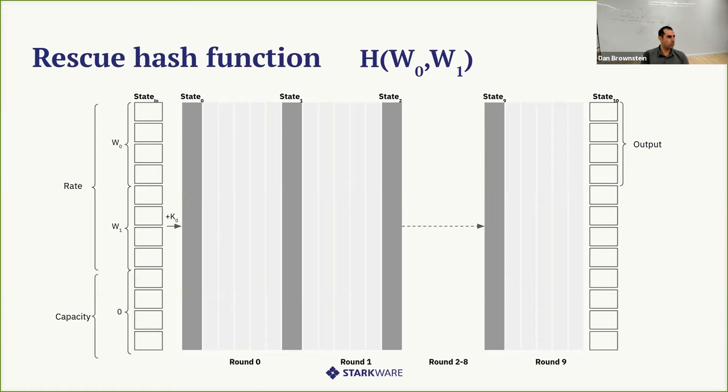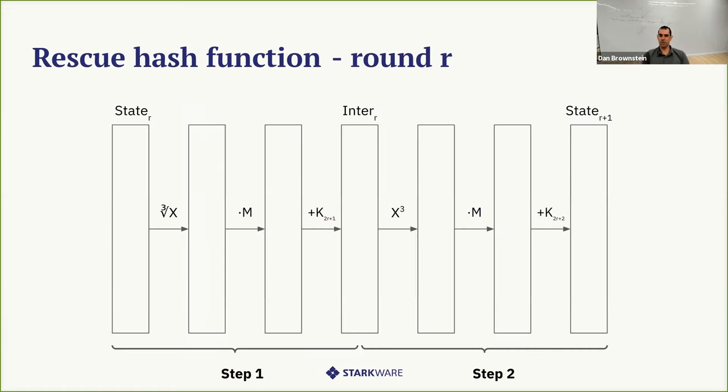If you looked into each round, so each round consists of two steps. Each step consists of an S-box. In the first step, it's taking the third root of each element of 12 elements in the state. In the second step, it's cubing each element. Then it is followed by multiplying by an MDS matrix, a maximum distance separable matrix, which mixes elements together. At the end of each step, we add a sub key or a constant element to each of the elements.